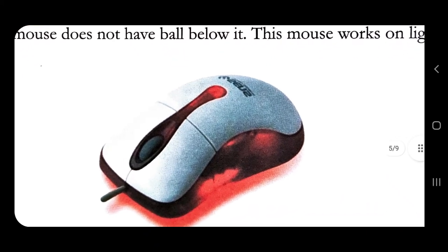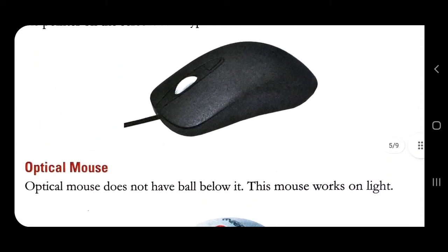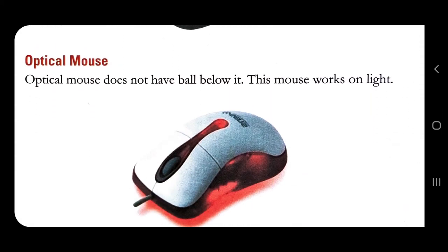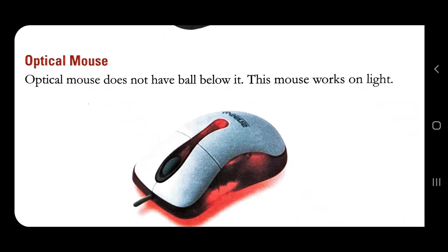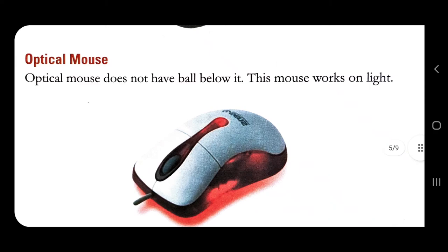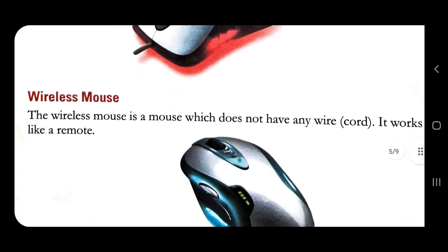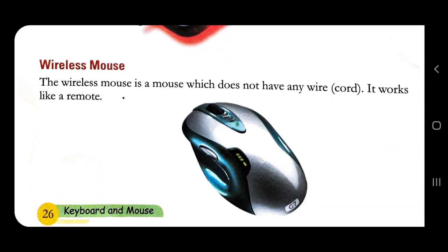Now let's come to the optical mouse. In the simple mouse, light was not there; in the optical mouse, light is there. The optical mouse does not have a ball below it. This mouse works on light — light is required for this mouse to work. It is known as an optical mouse.